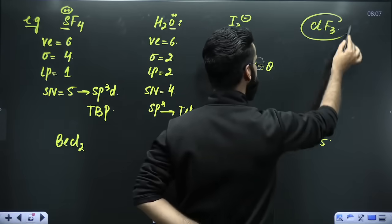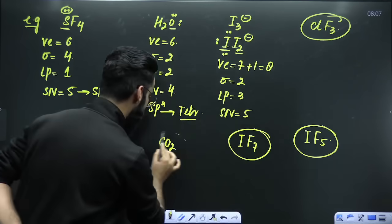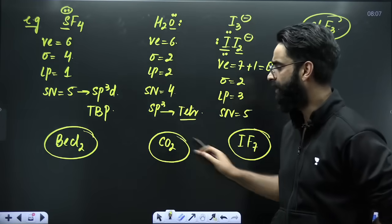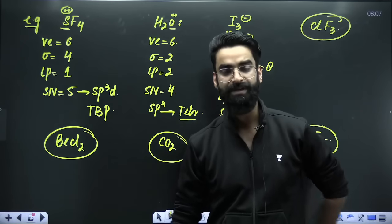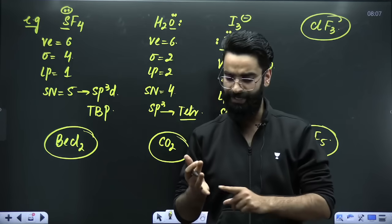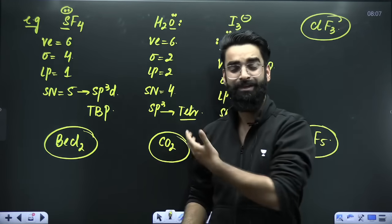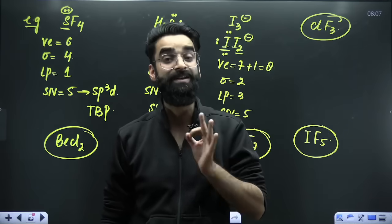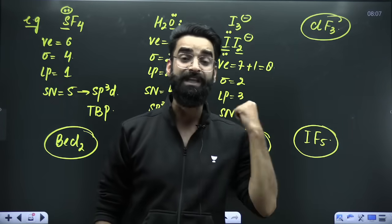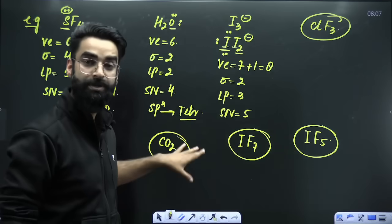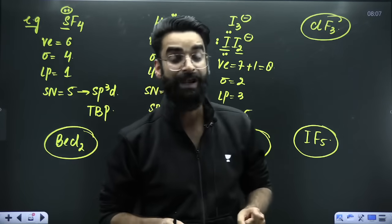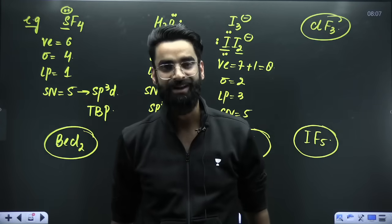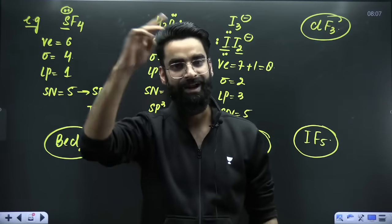Similarly, I have taken a few examples and you guys are going to let me know the hybridization of the central atom as well as the geometry. I hope you enjoyed these quick tricks by means of which you can calculate Bond Order in seconds and calculate the hybridization and geometry of different species in very little time. Quickly let me know in the comment section your answers. If you haven't liked the video yet, please like it, share it with everyone, and do subscribe to the channel. Take care, God bless you all and love you all. Bye bye!